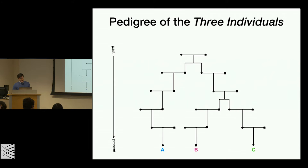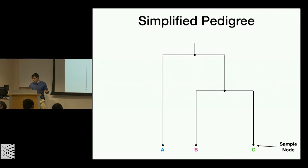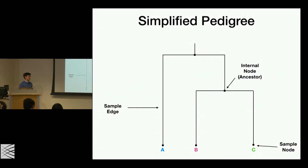At the bottom we have the present-day three sampled individuals, going back in time to their common ancestor. B and C are related about three generations back, and A finds a common ancestor with the common ancestor of B and C a few generations after that. Let's simplify this and only record the common ancestor events. Let's fix terminology: we call the sampled genomes 'sample nodes,' ancestors are 'internal nodes' or 'ancestral genomes.' Edges connect nodes — sample edges connect a sample to an ancestor, and ancestral edges connect an ancestor to an older ancestor.